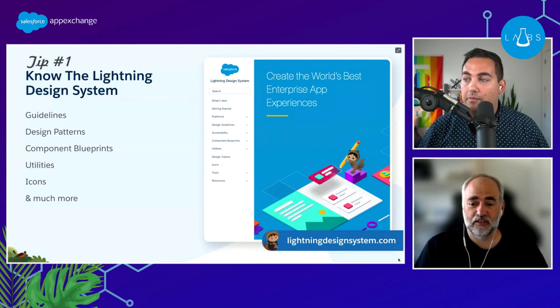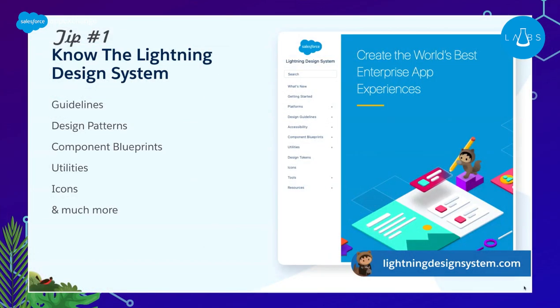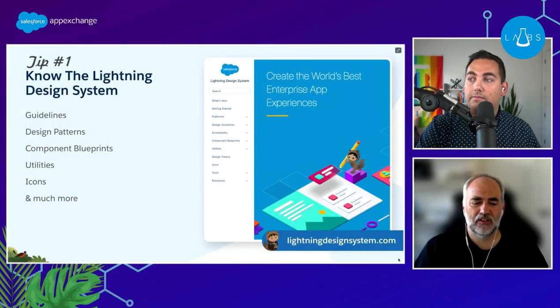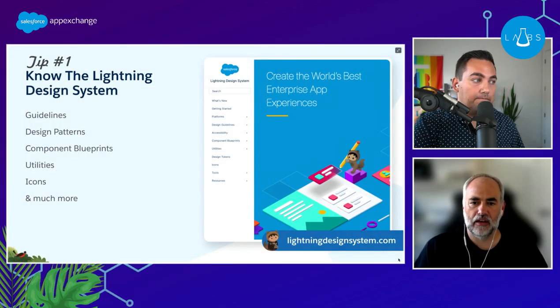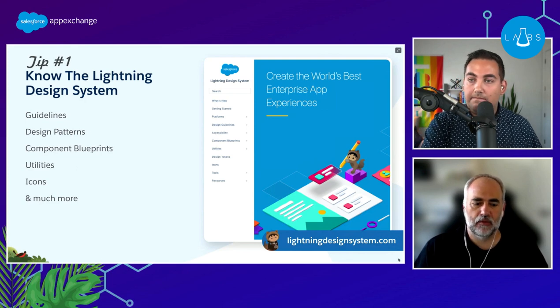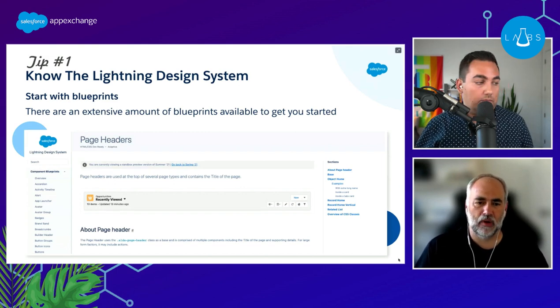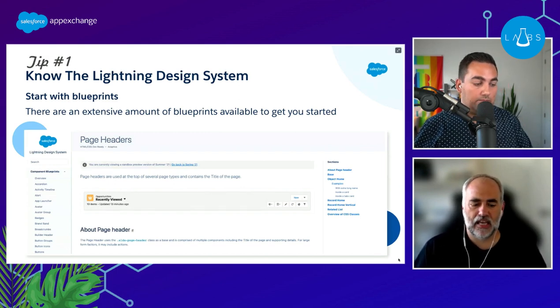The Lightning Design System is available at lightningdesignsystem.com — just search for SLDS and you'll get there. It gives you design guidelines and principles for building your applications, covering multiple platforms. It provides the how and why you should use different layouts and features. Starting with blueprints — these are probably the main ones you look at, and they tell you how a particular element is actually constructed.